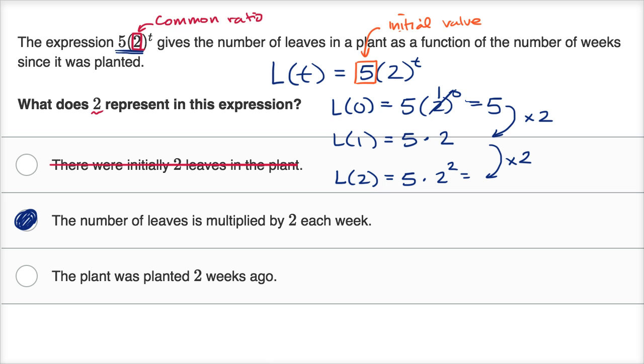Let's look at the last one just for good measure. The plant was planted two weeks ago. Well, no, they don't tell us anything about that. This is a general expression for t weeks after it was planted. So they're not saying when it was actually planted. So we could rule that out and we feel good about that second choice.